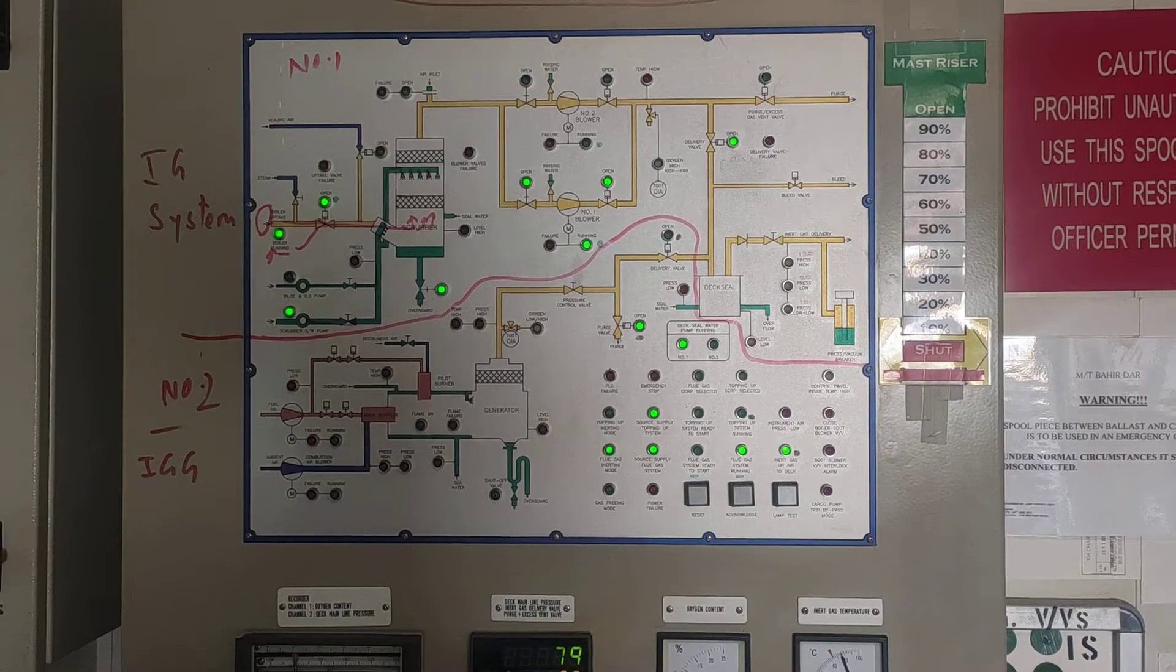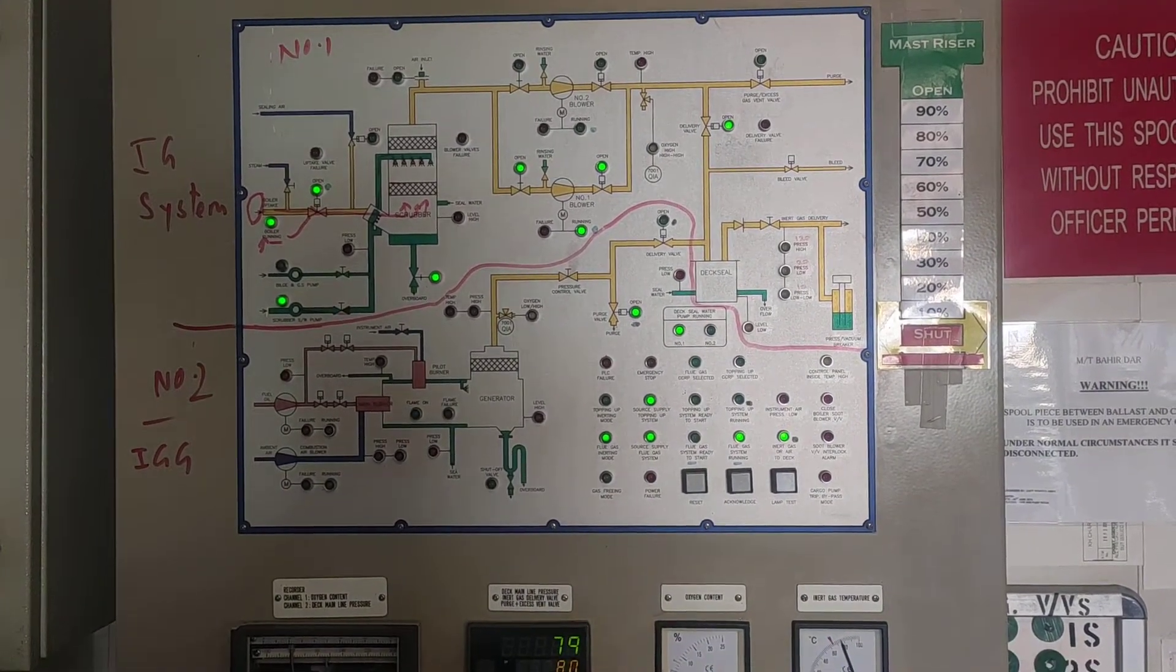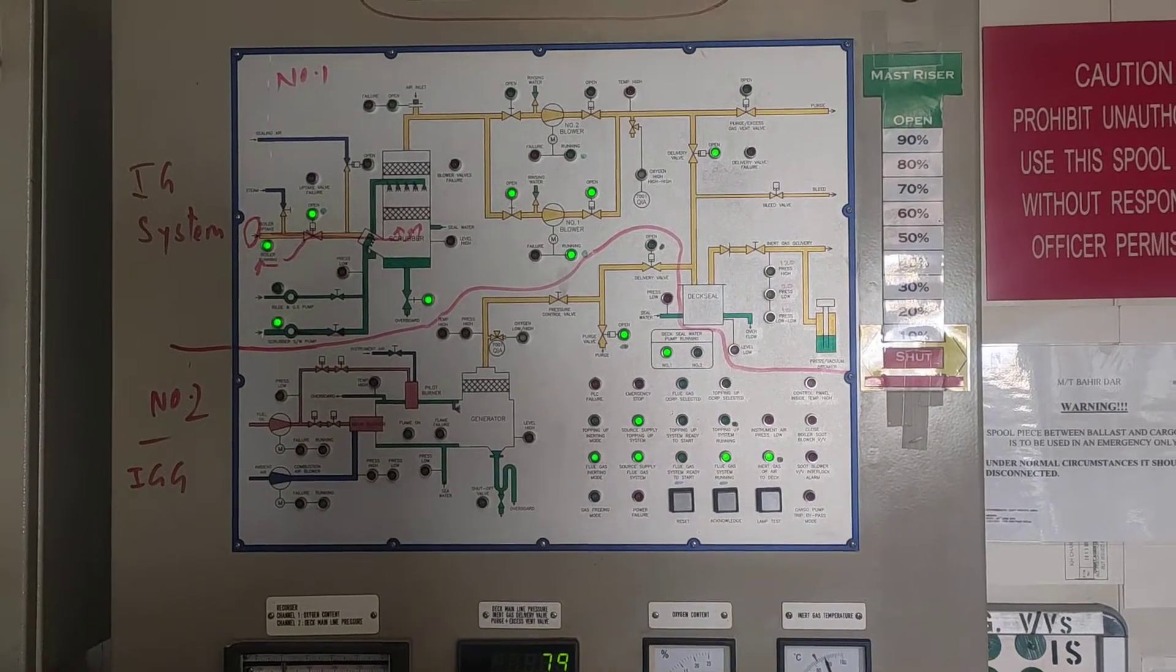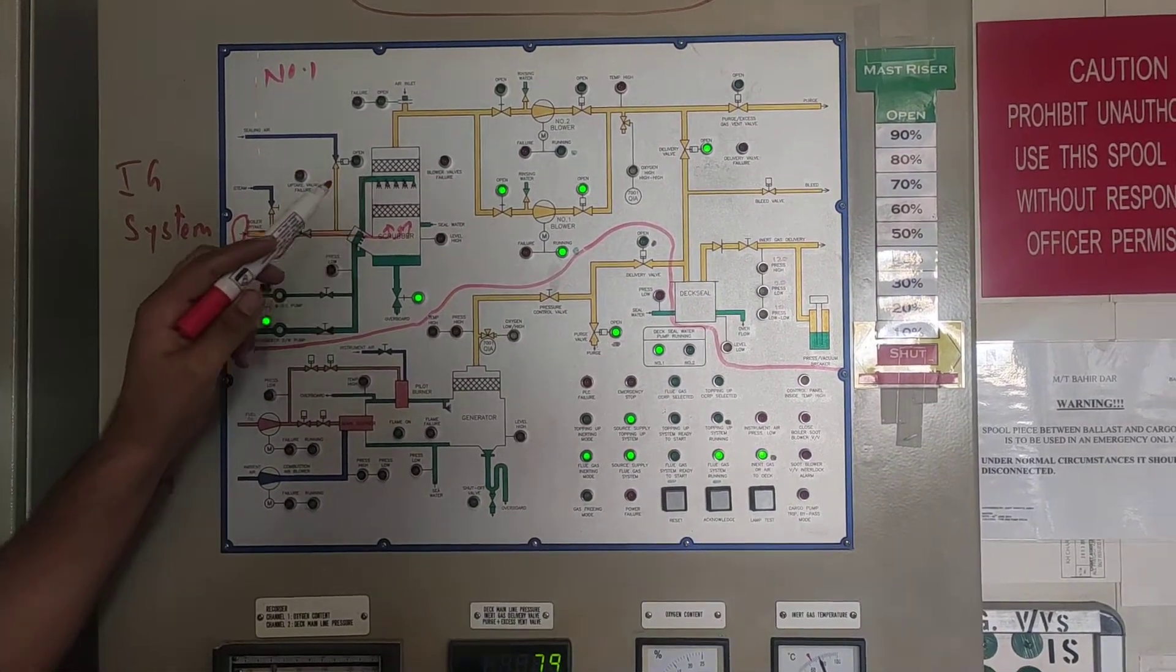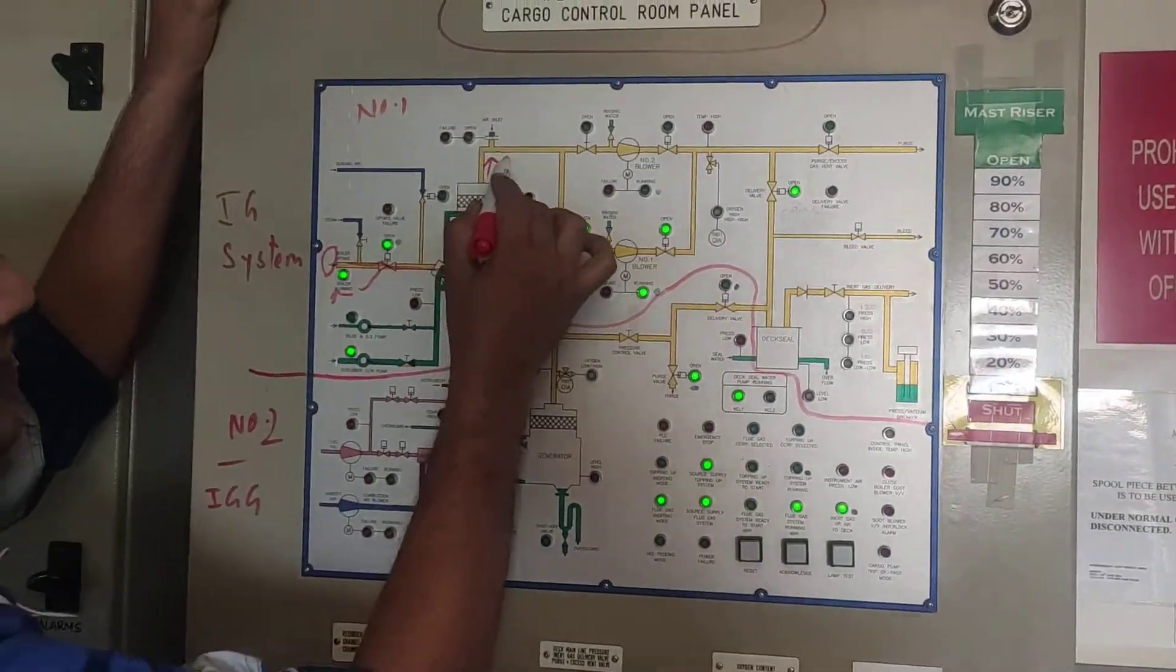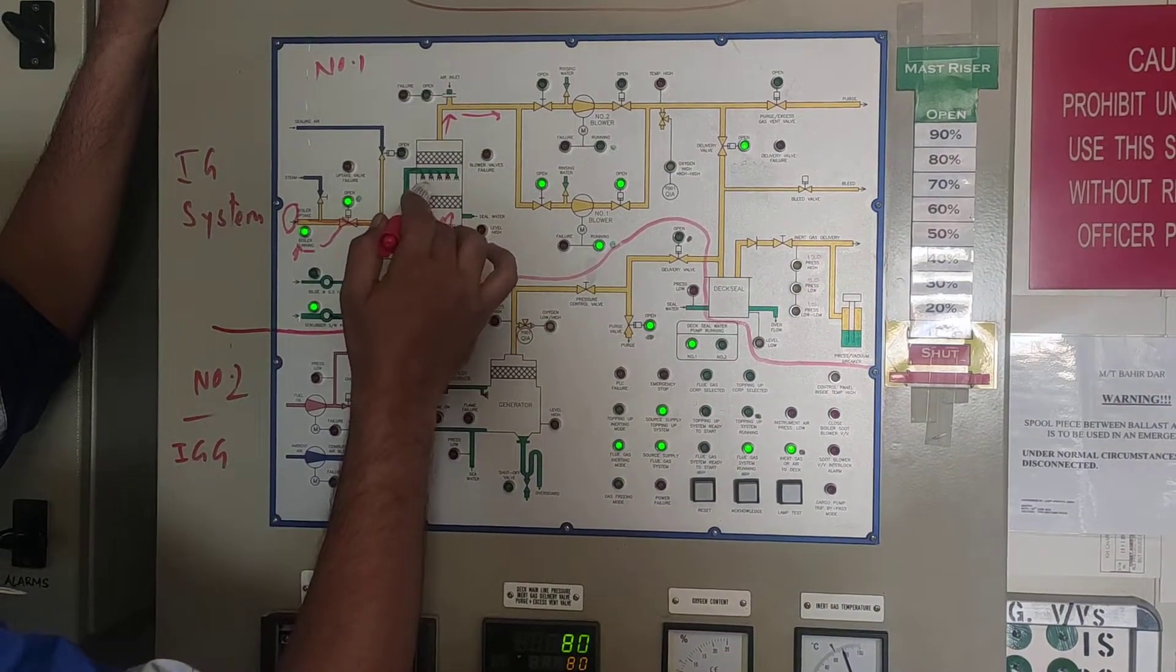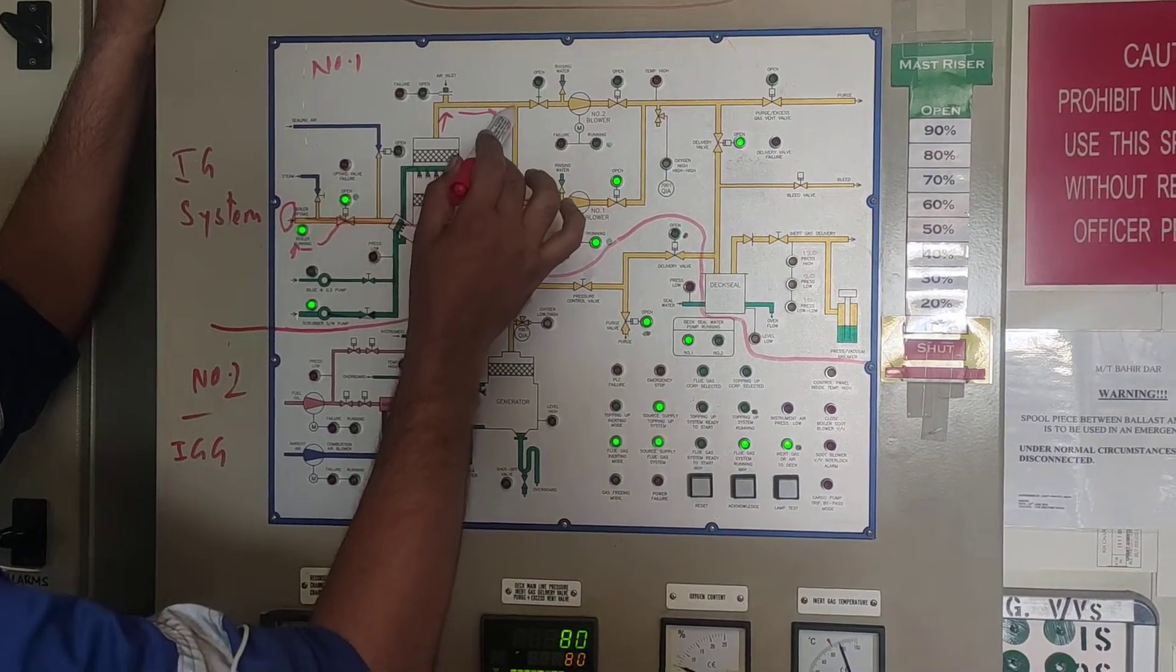It is absorbed by this demister patch. Also, some impurities what are present, water vapor and all, what is present is taken out with the help of this demister patch. Then, this clean gases passes through here. Also, the temperature of the IG is reduced because of this water and it comes here.